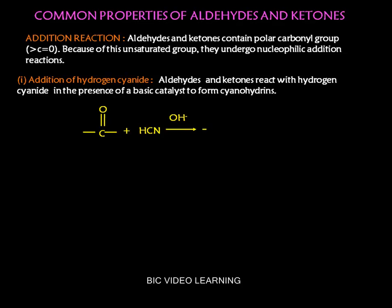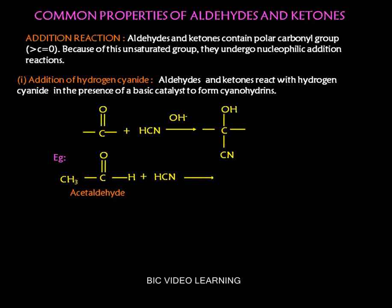Let us see how hydrogen cyanide adds with aldehydes and ketones. Hydrogen cyanide in the presence of a basic catalyst will add with the carbonyl group, forming the corresponding cyanohydrins. For example, acetaldehyde when treated with hydrogen cyanide in the presence of a basic catalyst will form acetaldehyde cyanohydrin as the product, by undergoing nucleophilic addition reaction.